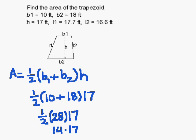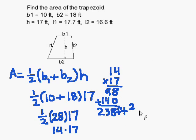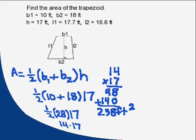Now let's go ahead and multiply 14 times 17. I get 238 feet squared. Remember, this is area, so area is always in terms of squared units. And that completes our problem.